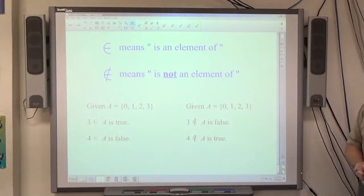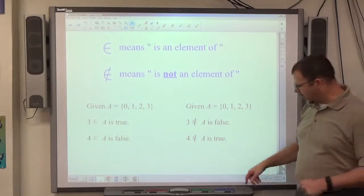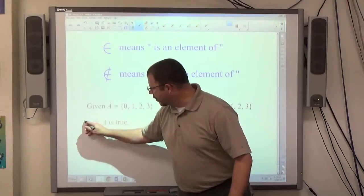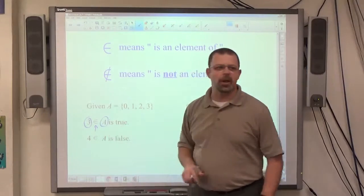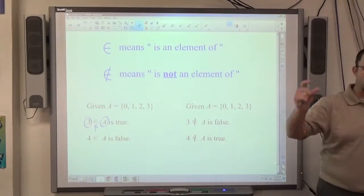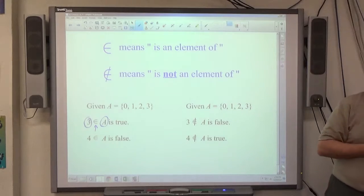And when you write the element symbol properly, the number goes on the left, the element symbol goes in the middle, and the set name goes on the right. So when you're writing these element symbols, the number that you care about is an element of the set you care about.